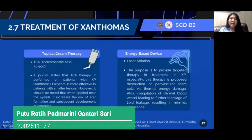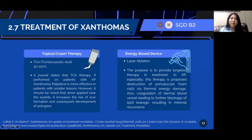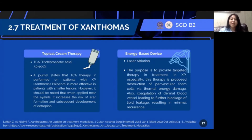My name is Puttu Ratti Padmarini Gantarisari, with the student ID number 2002511177. I will continue the presentations about the treatment of Xanthoma. Actions to remove Xanthoma can be done by topical cream therapy, energy-based devices, systemic therapy, or surgery. In topical cream therapy, the doctor often uses trichloroacetic acid (TCA), a type of destruction therapy applied topically at 50% to 100% concentration. A journal states that TCA therapy, if performed on patients with Xanthelasma palpebrarum, is more effective in patients with smaller lesions. However, when applied near the eyelids, it increases the risk of scar formation and subsequent development of ectropion. The second therapy often used is laser ablation, a kind of energy-based therapy.